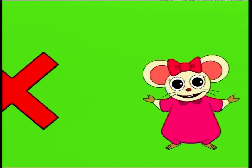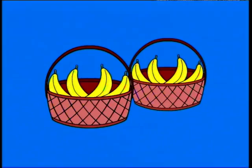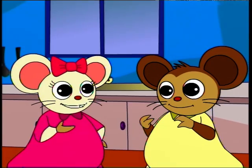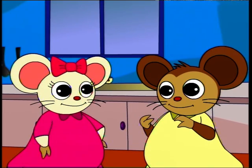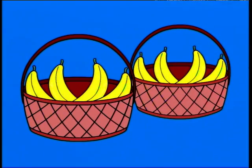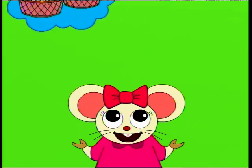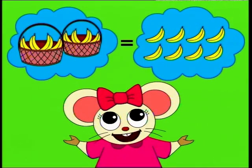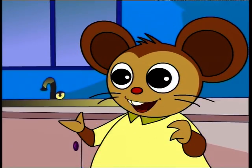The symbol for multiplication is X. To count the bananas using multiplication, we have to look at the baskets first. How many baskets are there? Two baskets. How many bananas are in each of the baskets? Four bananas. So, if there are two baskets with four bananas in each of them, then there are eight bananas.